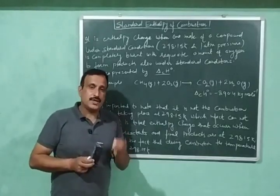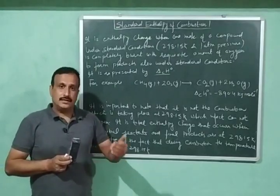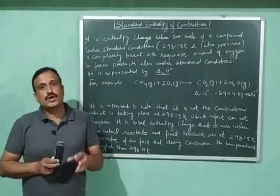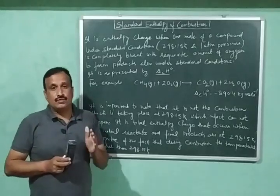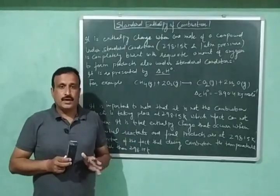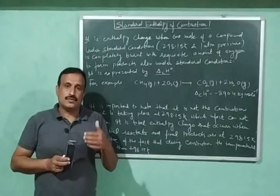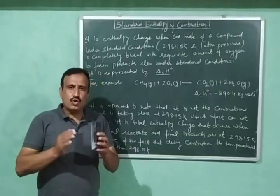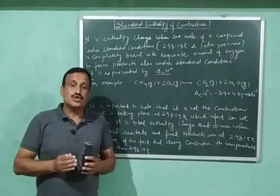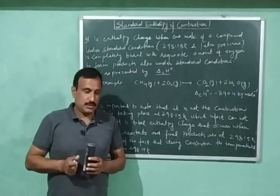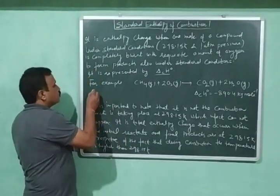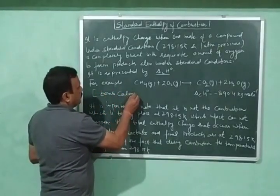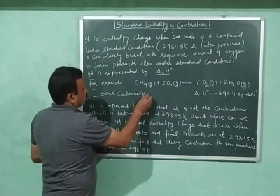These combustion reactions are always accompanied with the evolution of heat. So these reactions are exothermic and their enthalpy change will always be negative. This standard enthalpy of combustion is measured by burning a compound in closed steel containers which are called a bomb calorimeter. So the name of the instrument is bomb calorimeter.